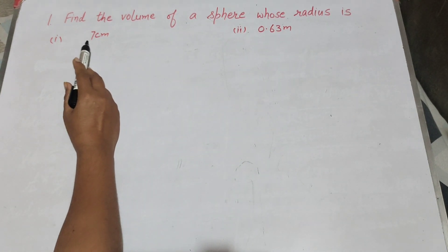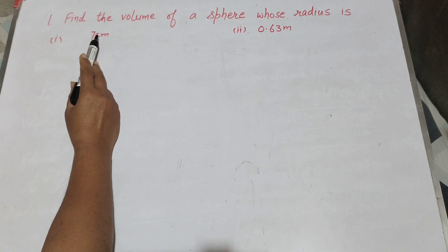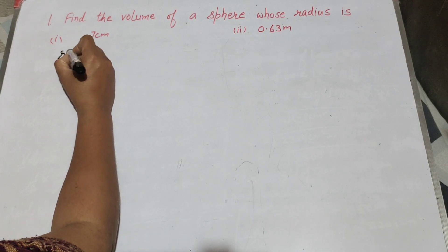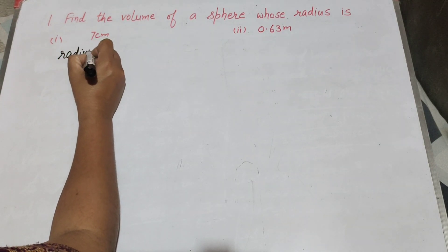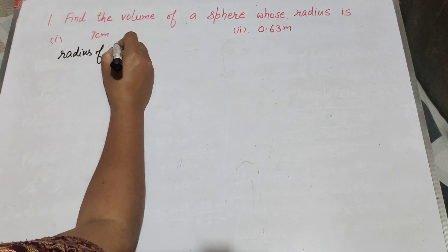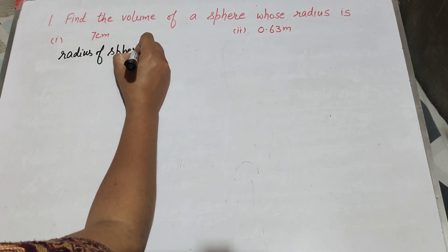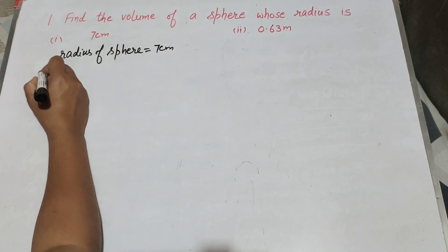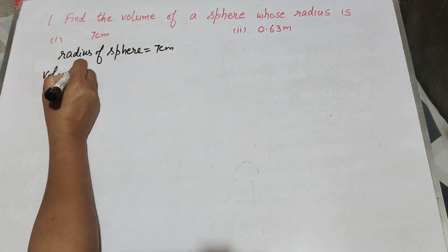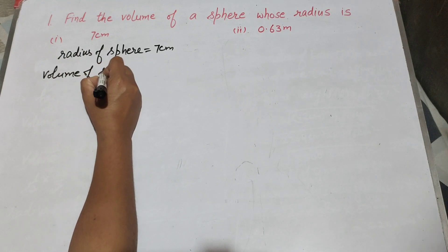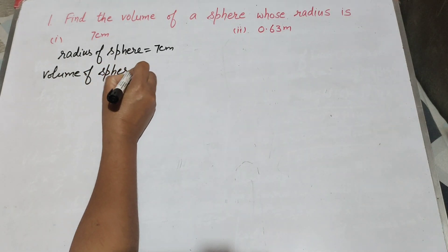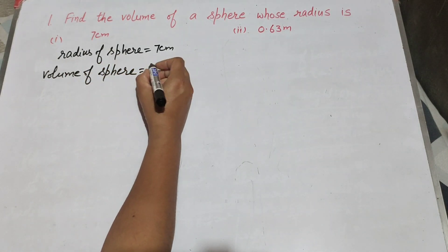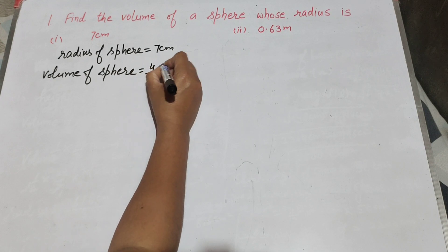So there are two parts. First we move to the first part. The given thing is radius of sphere. Radius of sphere is equal to 7 cm, and we need to find volume of sphere. We know the formula to find volume of sphere: it is equal to 4 over 3 pi r cube.